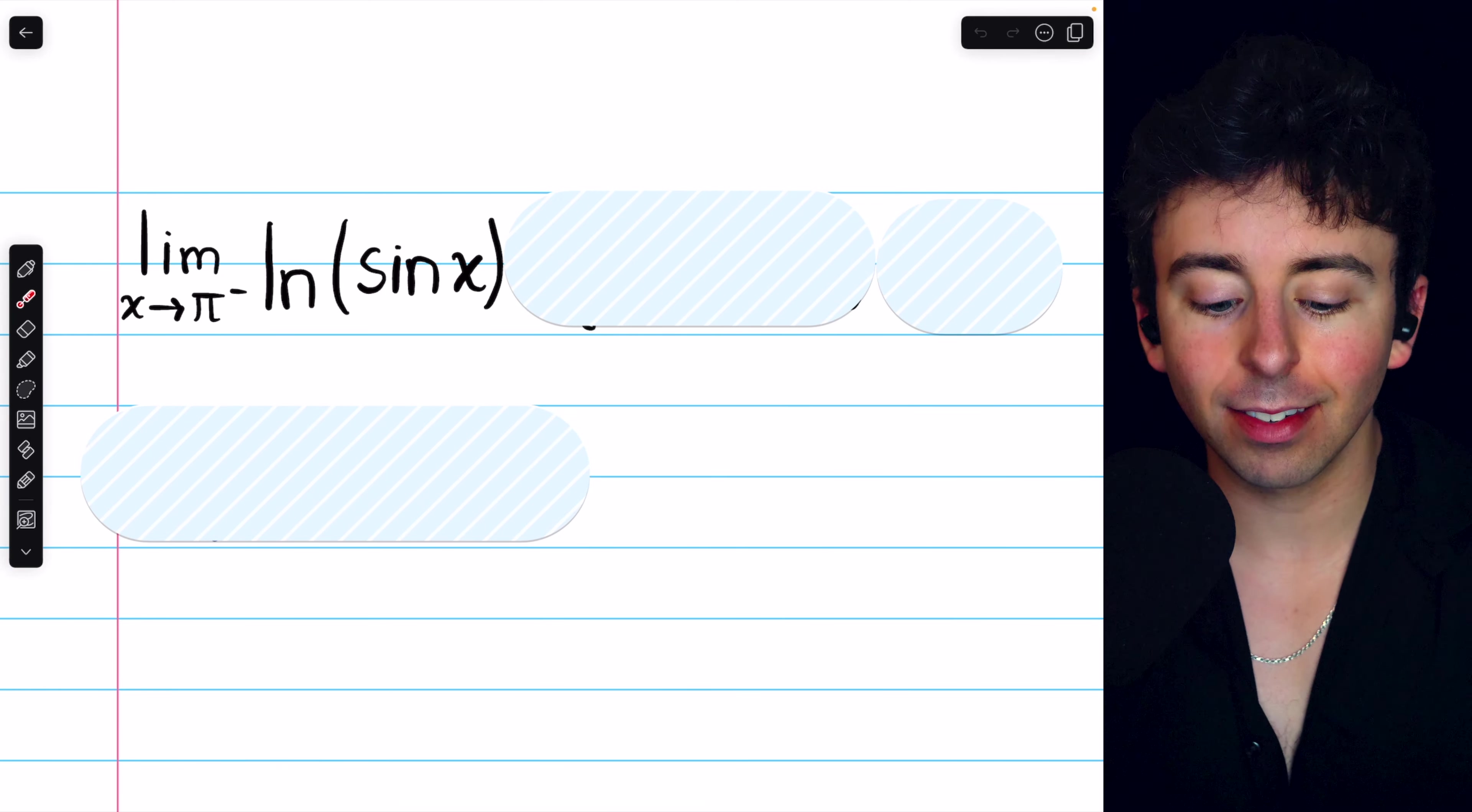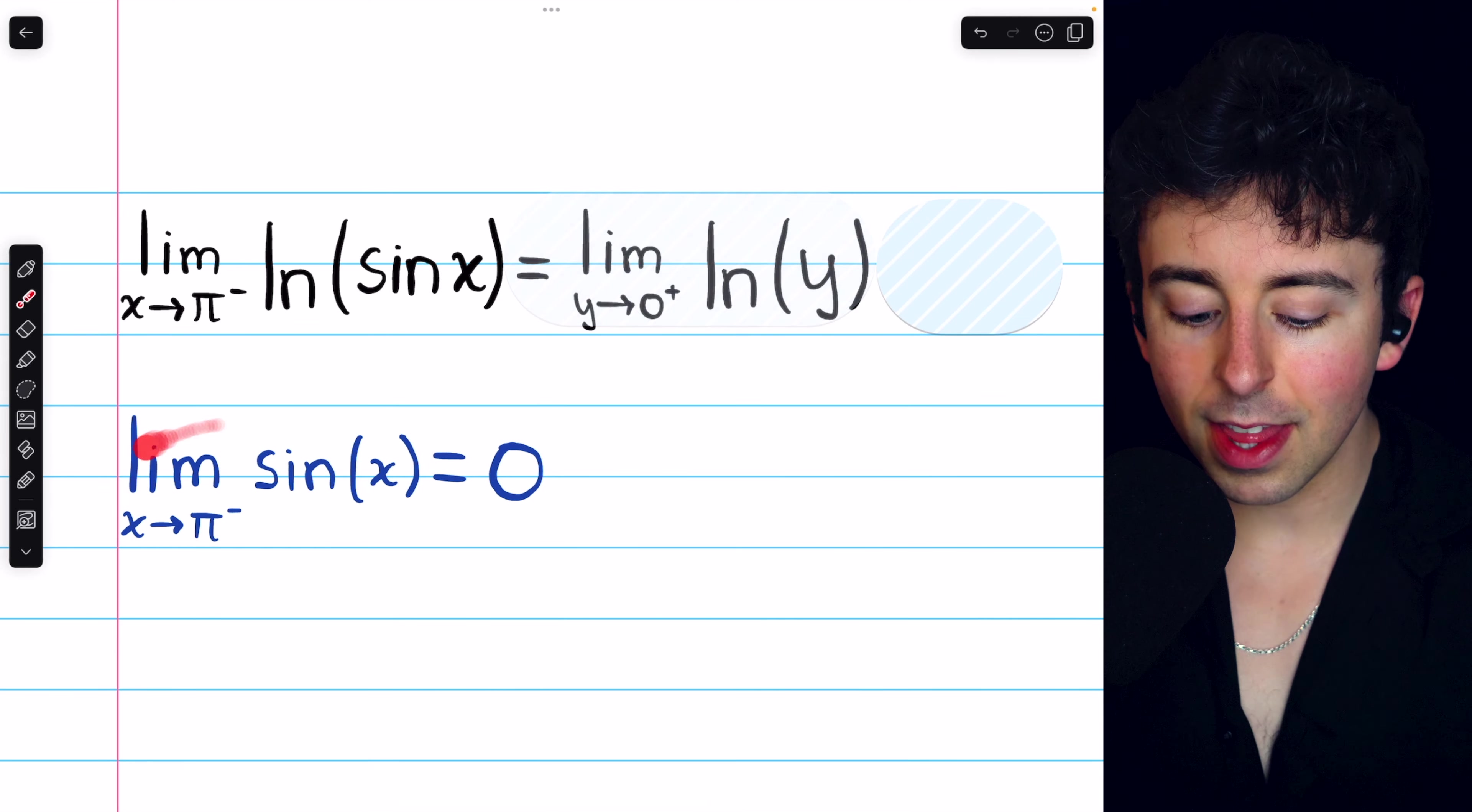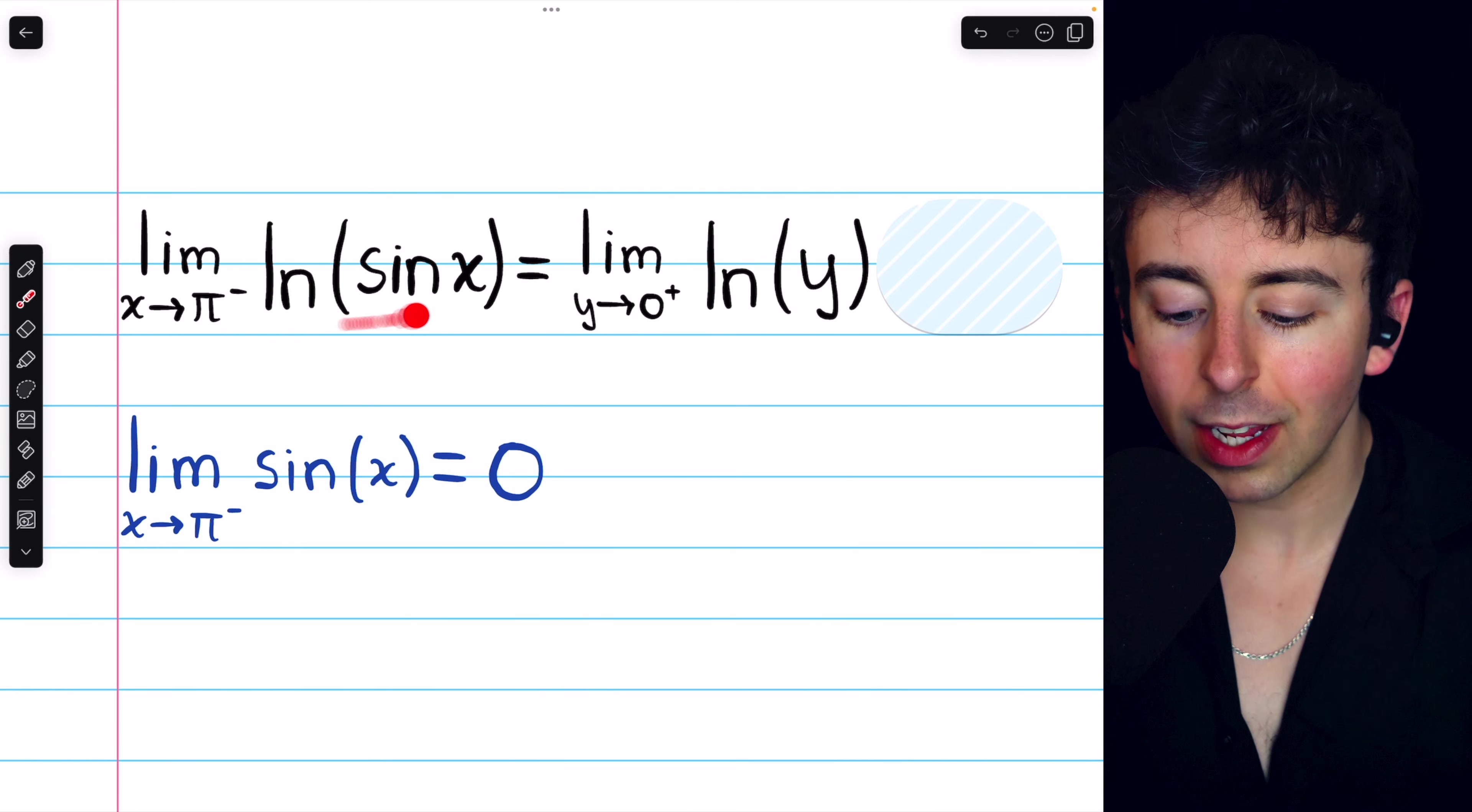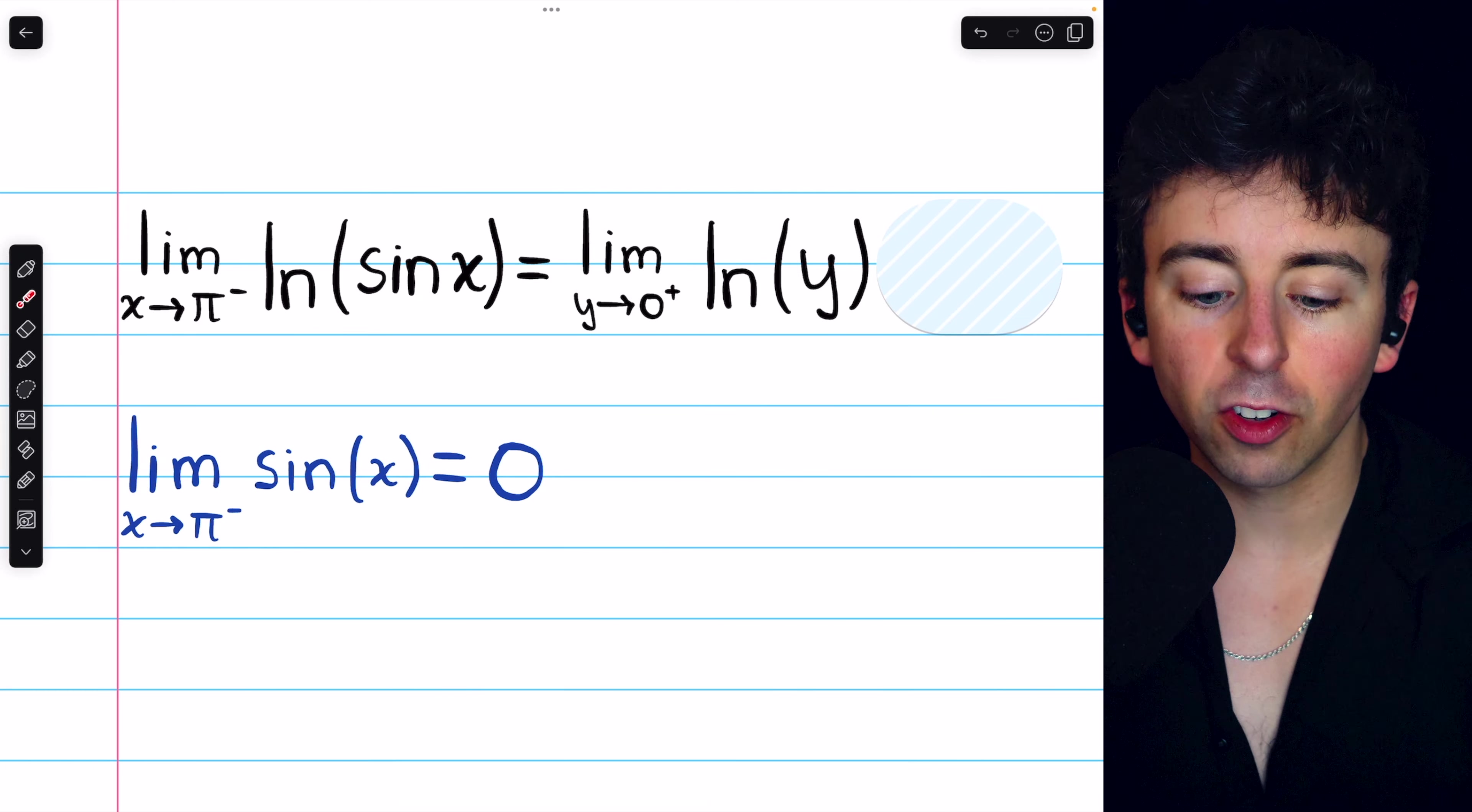If we look at that limit, the limit of sine x as x approaches pi from the left, we could just plug pi in because sine is continuous. Sine of pi, perhaps you recall, is equal to zero. This is, of course, why we can't just plug pi in the original limit, because the natural log of zero is not defined.